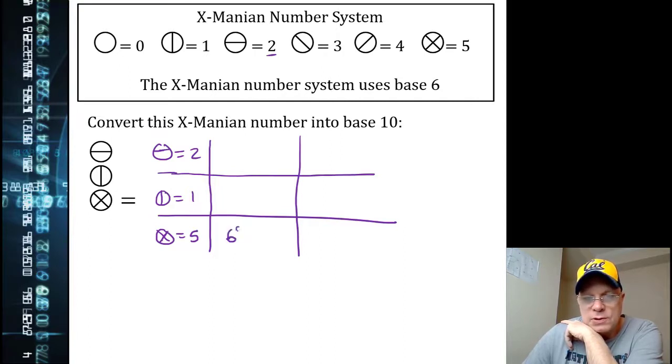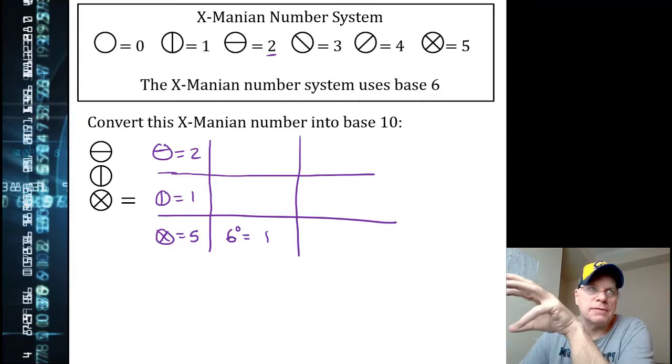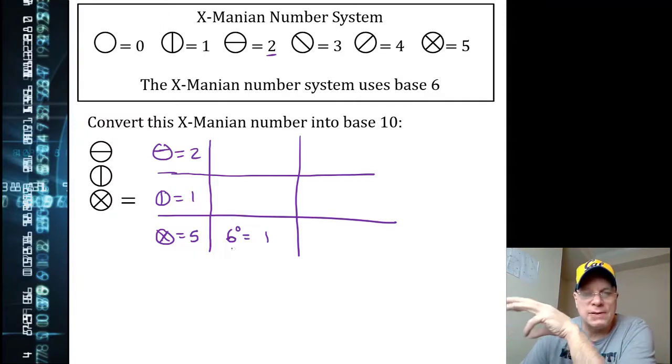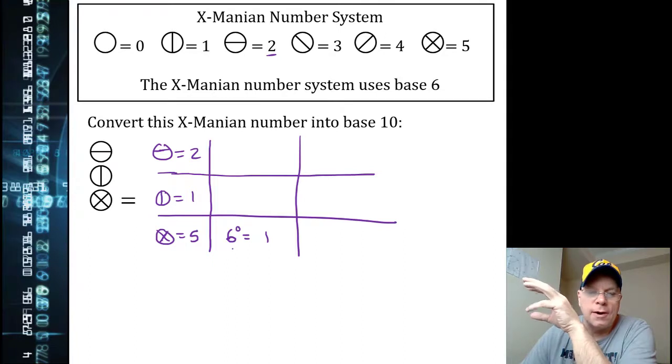This lowest row is the ones place, just like our lowest whole number place value is the ones place. But not for the same reason. Ours is the ones place because 10 to the zero is one. The alien system is the ones place because 6 to the zero is one.